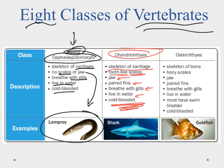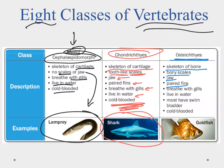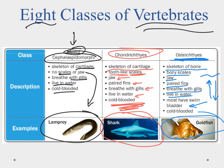Finally, the Osteichthyes are the bony fishes — skeleton made of bones, bony scales, jaws, and paired fins. They also use gills and breathe underwater. Most osteichthyes have a special structure called a swim bladder — like a balloon inside their body that controls the amount of gas inside, keeping them from sinking to the bottom. They can put more gas in to rise toward the surface, or take some out to go down, and it also keeps them oriented correctly. If you ever open up a fish you can find this little air bladder inside.